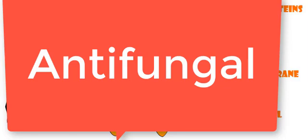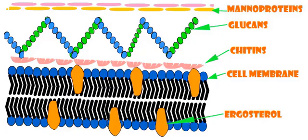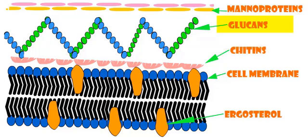An antifungal agent is a drug that selectively eliminates fungal pathogens from a host with minimal toxicity to the host. One of the targets of antifungal agents is the fungal cell wall, which is composed of mannoproteins, chitins, acetylglucosamine polymers, and alpha- and beta-linked glucans. The fungal cell membranes have a unique sterol, ergosterol, which replaces cholesterol found in mammalian cell membranes.